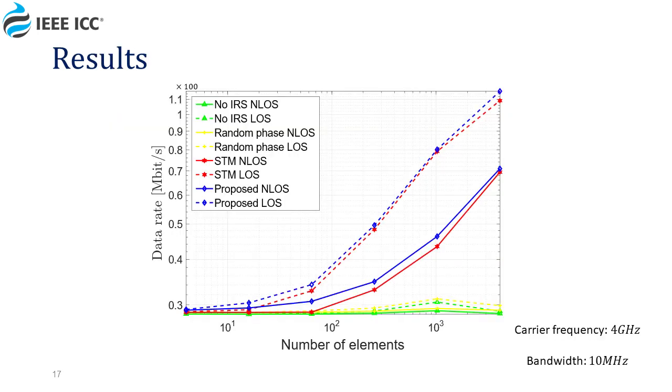The results of our algorithm are presented here for users with and without line of sight to the IRS, depending on the number of elements in the IRS. Our results are compared to the results obtained from the IRS configuration created by the STM algorithm.